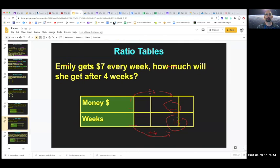Let's try another one. Let's clear all this stuff. All right. So here we have a pretty simple one. Emily gets $7 every week. How much will she get after four weeks? Well, let's put what we know here. We know she gets $7, so we put a seven there, every week. That means every one week. So in one week, she gets $7.